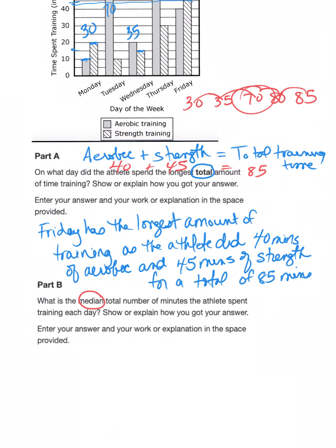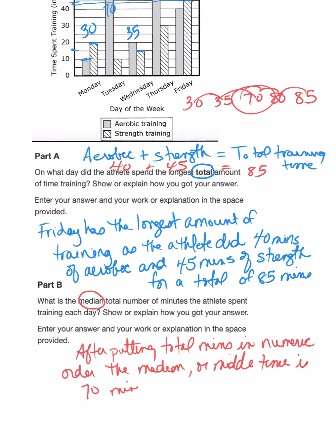Again, you could explain this in words and say, 'After putting total minutes in numeric order, the median or middle time is 70 minutes.' Or you can list them out in order by number, then count to the center and show that 70 is the median number. Either one is correct.